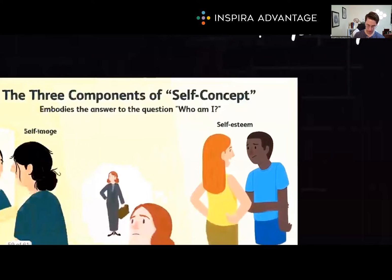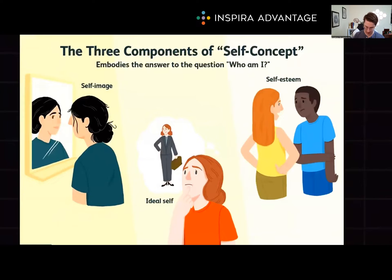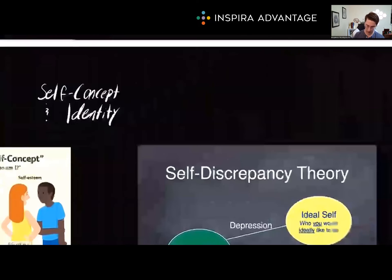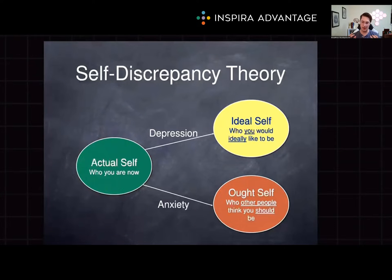Let's start with self-concept, which refers to the sum of ways in which we describe ourselves. It consists of individual identities related to the groups we belong to. Our self-esteem is affected by how close our actual self is to our ideal self and our ought self — this is known as the self-discrepancy theory. The further away we are from the ideal and ought self, the more distressed we are, whether that's more depression or more anxiety.